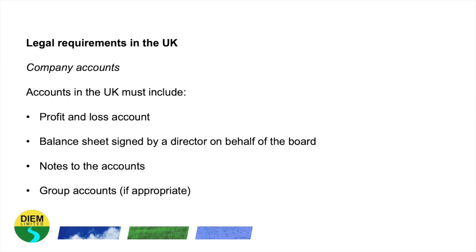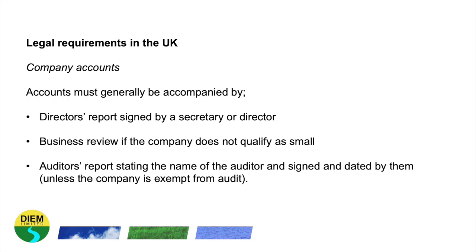Accounts must generally be accompanied by a director's report signed by a company secretary or a director, a business review if the company does not qualify as a small business — we're going to be looking at this a little bit later on — and an auditor's report stating the name of the auditor, signed and dated by them, unless the company is exempt from audit. We're going to look at exemptions from audit a little bit later also.